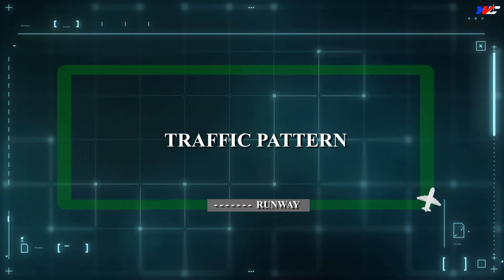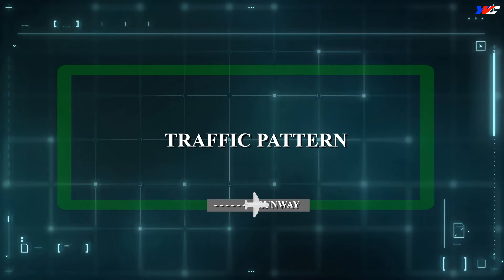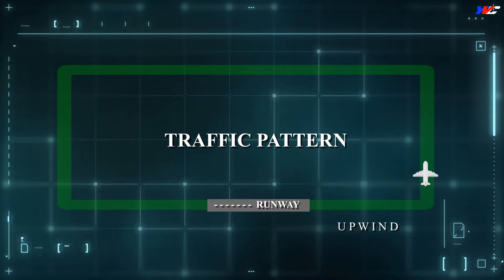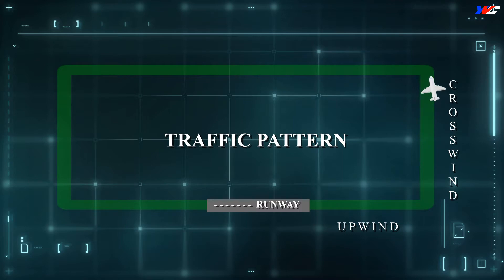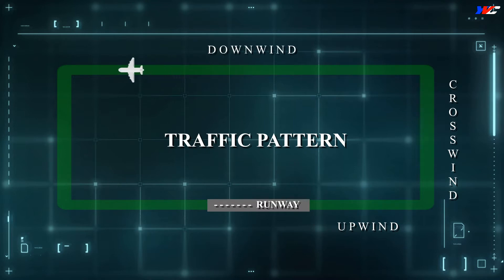Traffic patterns are basically a rectangular racecourse pattern, left or right around the runway, based on the location of the city or highest obstacle. We take off from a given runway, and on the runway heading, that first climb leg is called the upwind leg. Then we take a 90-degree turn — in this case to the left, still climbing — that's called the crosswind leg. Then we turn another 90 degrees perpendicular, the longest leg running parallel to the runway, called the downwind leg. Then another 90-degree turn is the base leg, before turning towards the final leg for landing.